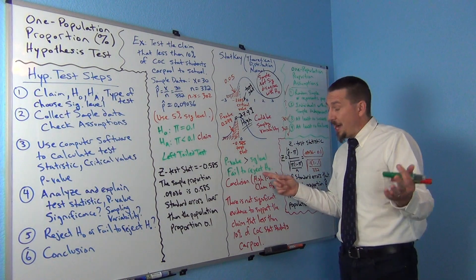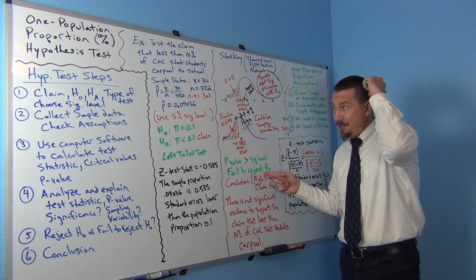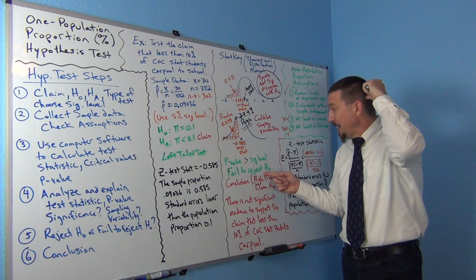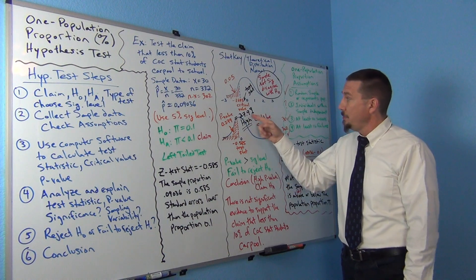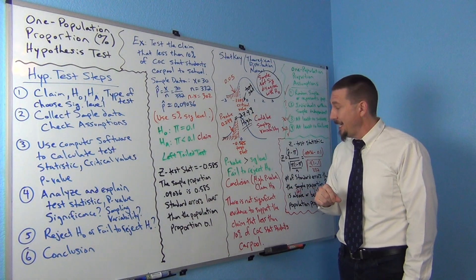Okay, that means the null hypothesis really might be correct, though we really don't have evidence for it because we have a high p-value. Remember, a high p-value is not evidence.